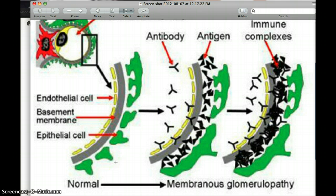So first we have the podocytes, followed by the epithelial, followed by the basement membrane, followed by the endothelial cells. So this is very, very important.